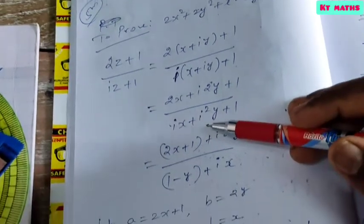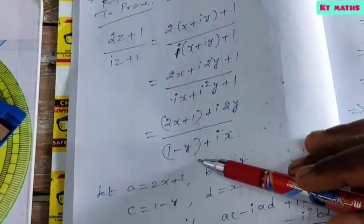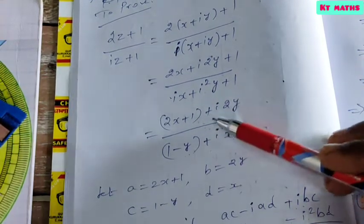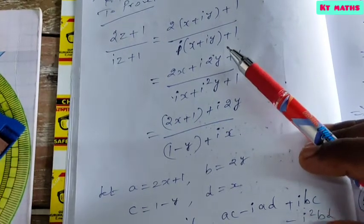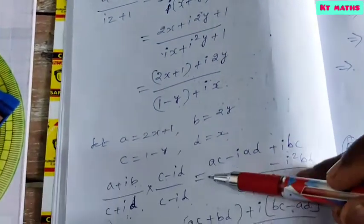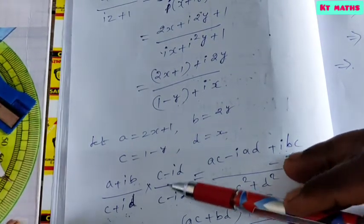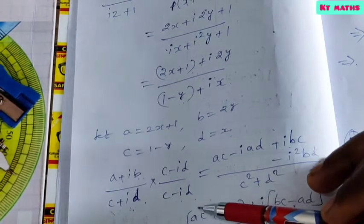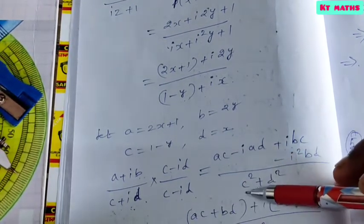We take A equals 2x plus 1, B equals 2y, C equals 1 minus y, and D equals x. So we have the form (A plus iB) by (C plus iD). To simplify, multiply numerator and denominator by the conjugate (C minus iD).